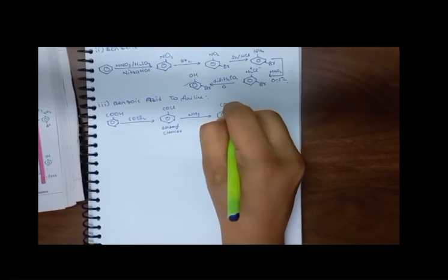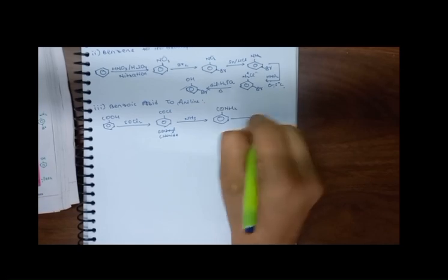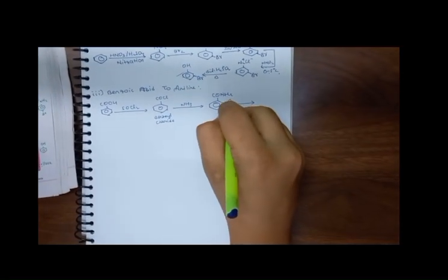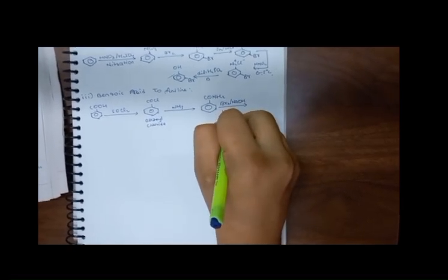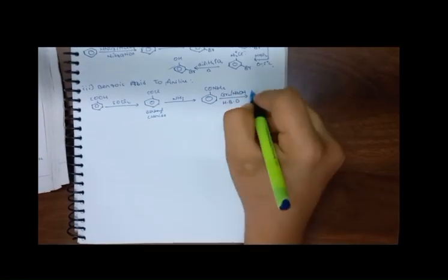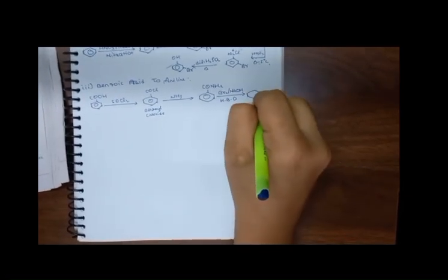This is Benzoyl Chloride. Treat with Ammonia — what do we get? Benzene with C=O and NH2, that is Benzamide. Now treating Benzamide with Br2/NaOH, which is Hoffmann Bromide Degradation, gives our final product Aniline.